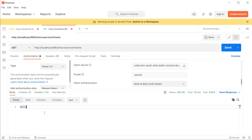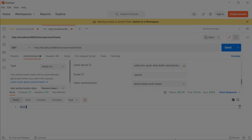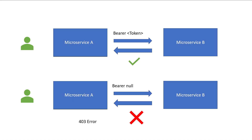Let's understand the token relay pattern. When working on a microservice architecture, we deal with multiple microservices talking to each other. When we first receive a request from the user to microservice A, and that microservice calls microservice B — since B is also a resource server — we have to forward the access token as part of the request, or else we will receive a 403 error. This is called the token relay pattern, similar to how a baton is exchanged in a relay race. Implementing this pattern is straightforward: while forwarding the request, include the access token as part of the Authorization header.